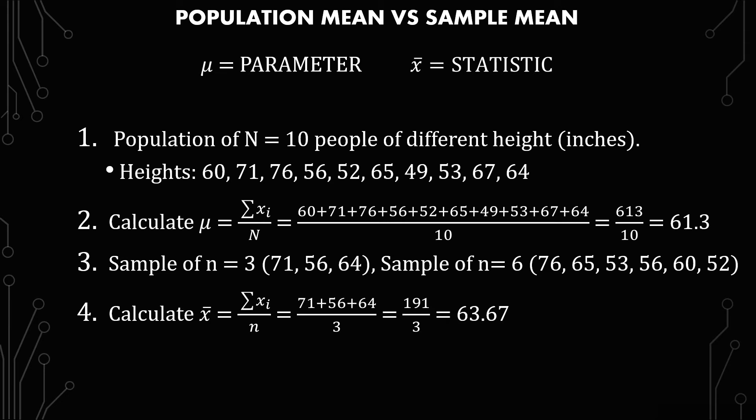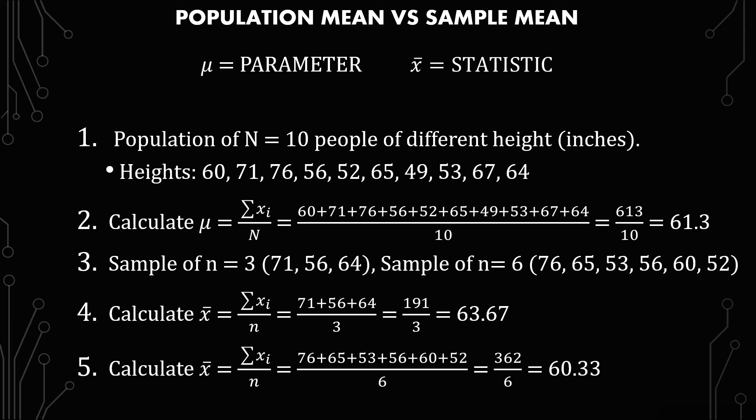That's rounded, and it's close to what mu is. If we increase the sample size, it'll get closer — and that's exactly what we'll do. X-bar equals the summation of xi over n, and n in this case is 6. So: 76 + 65 + 53 + 56 + 60 + 52 gives you 362 over 6, or 60.33 rounded.